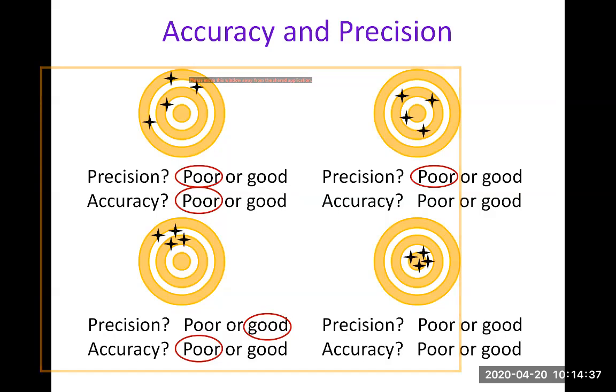What about accuracy now for this one? So remember, accuracy is when you have several measurements. If you take the average, the average should be close to the target value, the bullseye. And so here it is actually good because if you take the average, it's within the first circle in the center. So accuracy is not that bad because the average of those four shots, they are fairly close to the center.